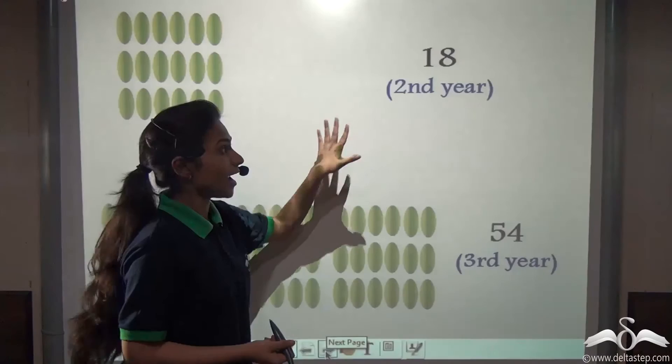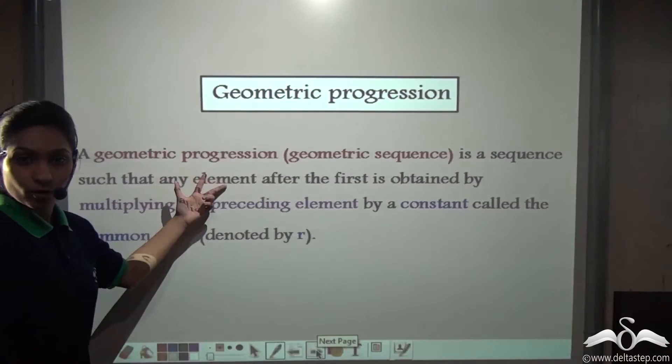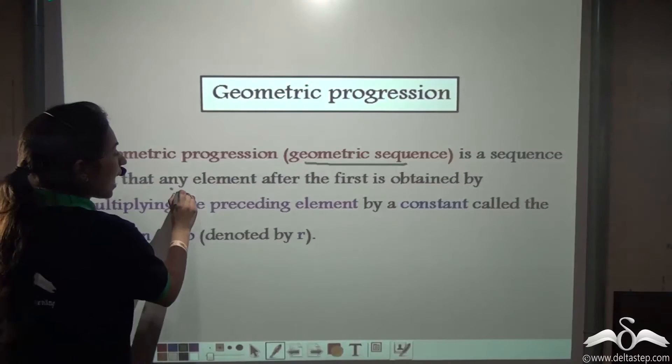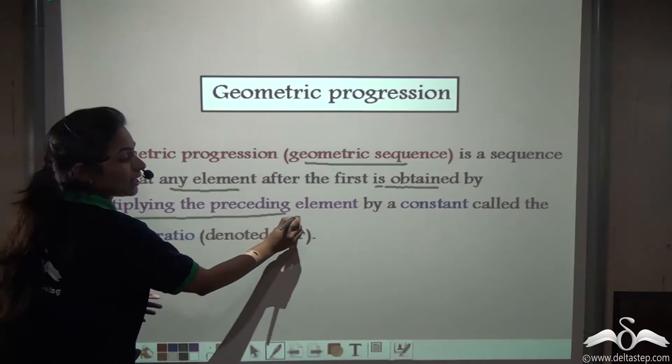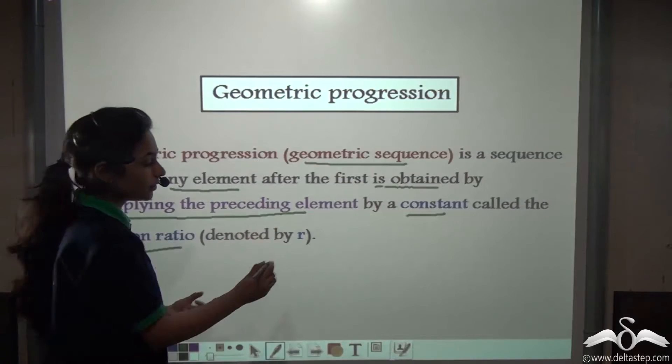Well the 6 in the first year, 18 in the second year and third year 54. A geometric progression or a geometric sequence is a sequence such that any element after the first is obtained by multiplying the preceding element by a constant which is called the common ratio and it is denoted by R.